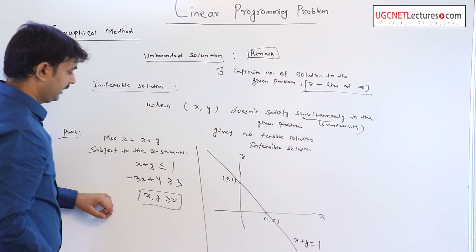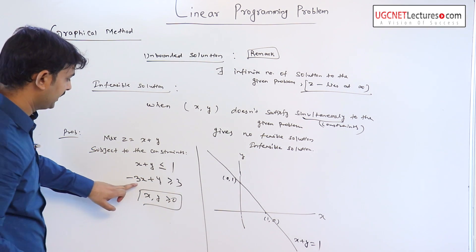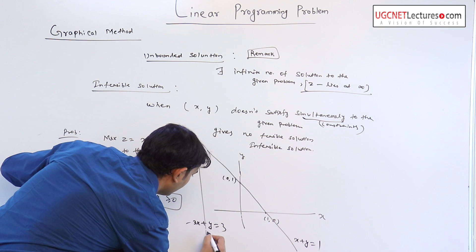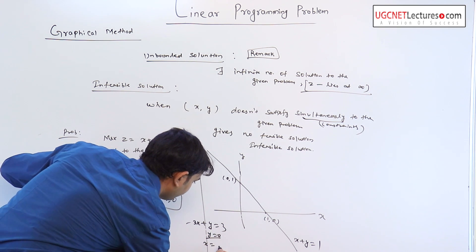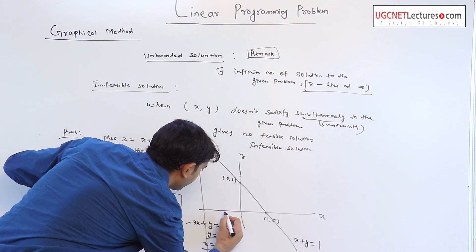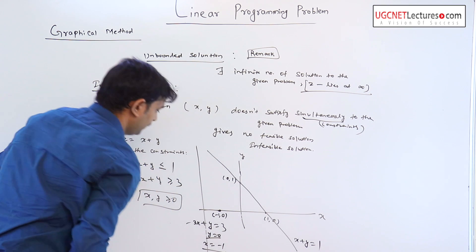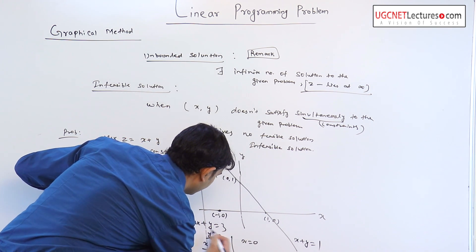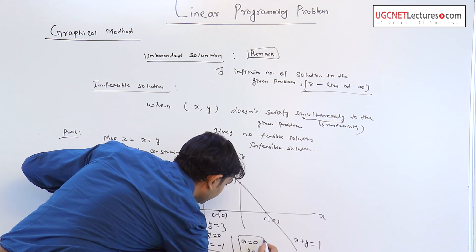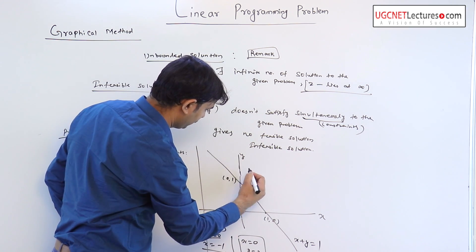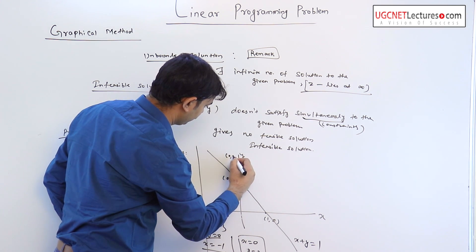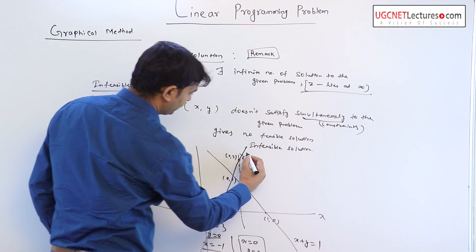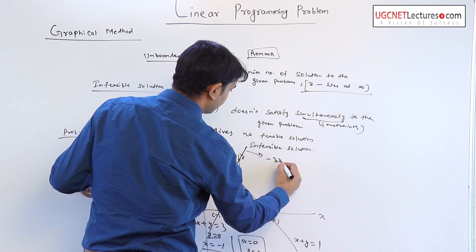The second constraint is minus 3x plus y greater than or equal to 3, so we plot the line minus 3x plus y equal to 3. If y equals 0, then x equals minus 1, giving the point (−1, 0). And if x equals 0, then y equals 3, giving the point (0, 3). The line passing through these two points represents our second constraint, minus 3x plus y equal to 3.